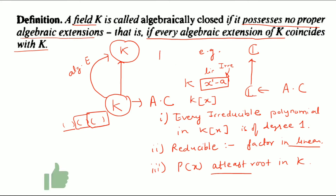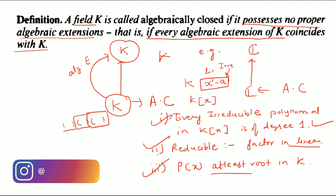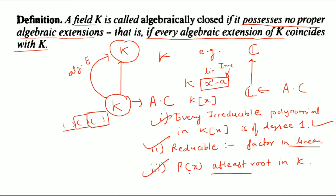So if you have any algebraically closed field k, these three properties hold: first, every irreducible polynomial in it has degree 1; second, every reducible polynomial can be completely factored into linear factors; and third, any polynomial will have at least one root that exists in k. This is how we understand what an algebraically closed field is.